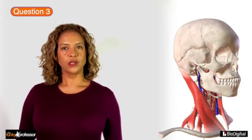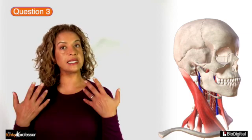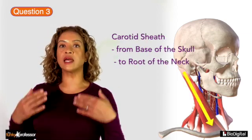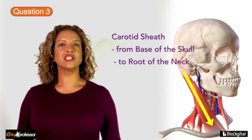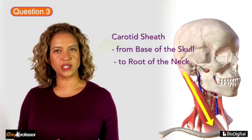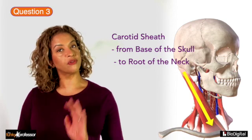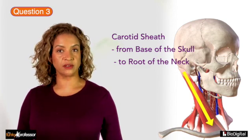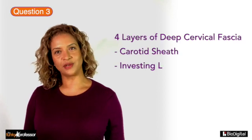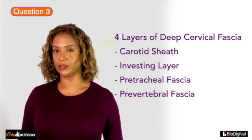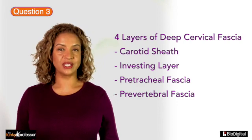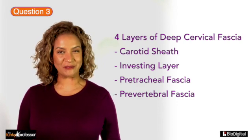Question 3. The carotid sheath is found in the neck. It runs from the base of the skull down to the root of the neck. It is formed by a deep condensation of fascia — it is in fact one of the four layers of deep cervical fascia found in the neck. The other three layers of deep cervical fascia include the investing layer, the pre-tracheal fascia, and the prevertebral fascia.